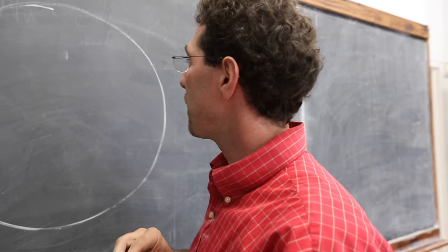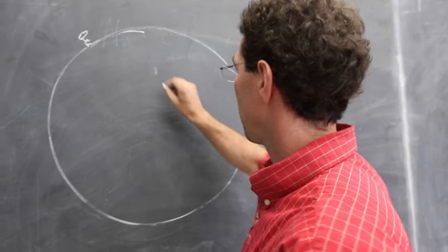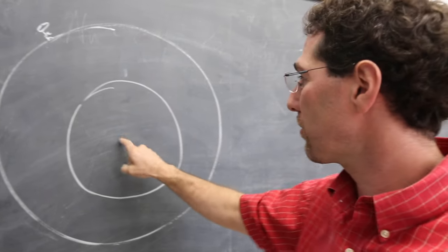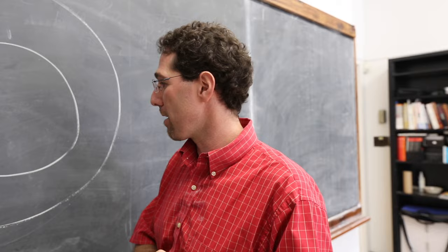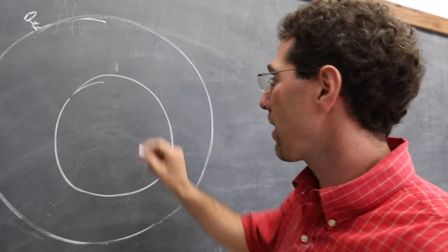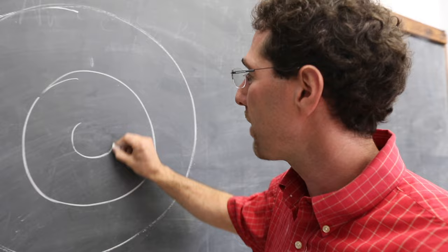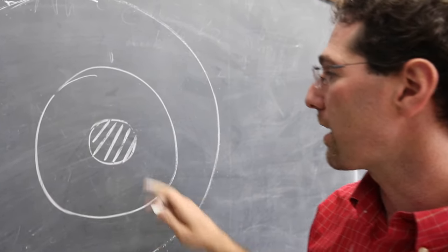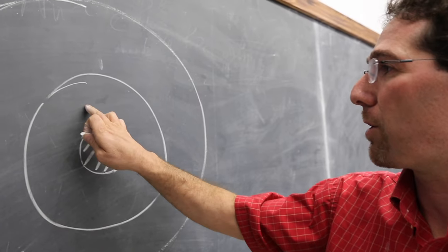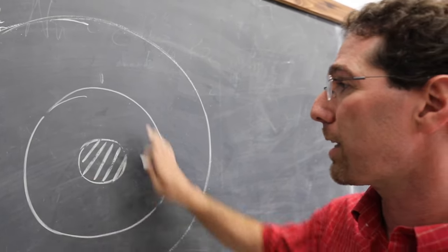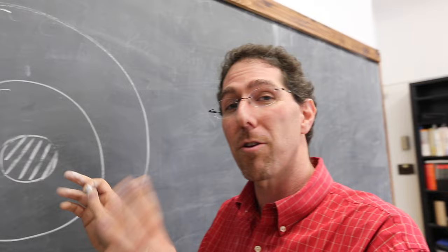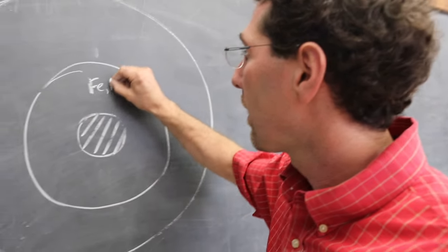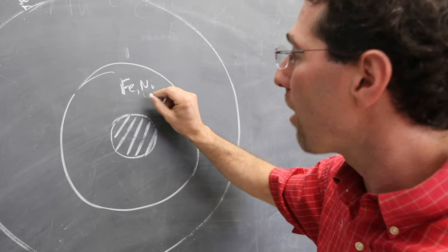But here's our planet, and if you cut a cross-section through it, the inner half is actually predominantly liquid metal. However, the pressure gets so high in the middle that the innermost third has actually solidified. So this part's solid. This part's liquid.